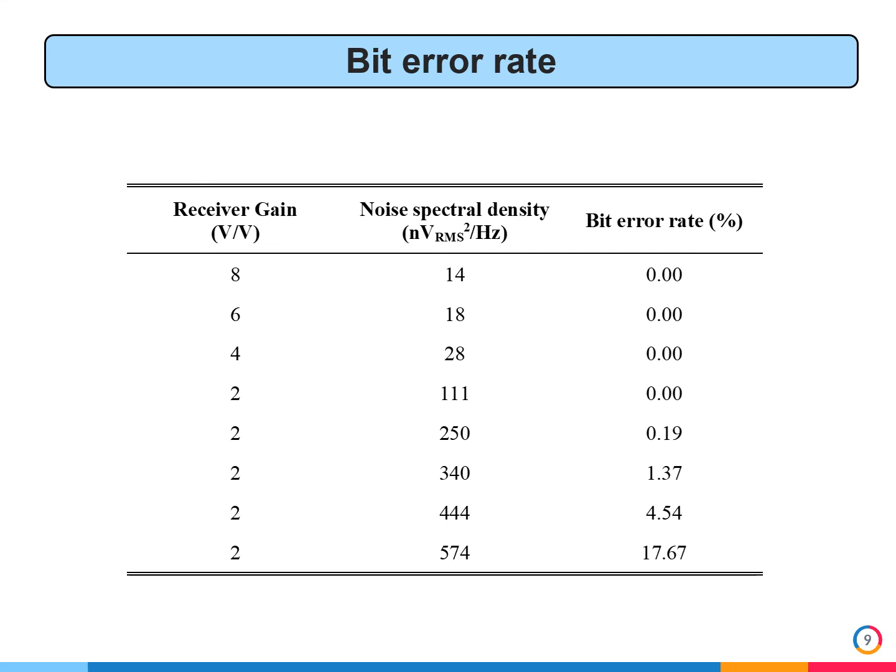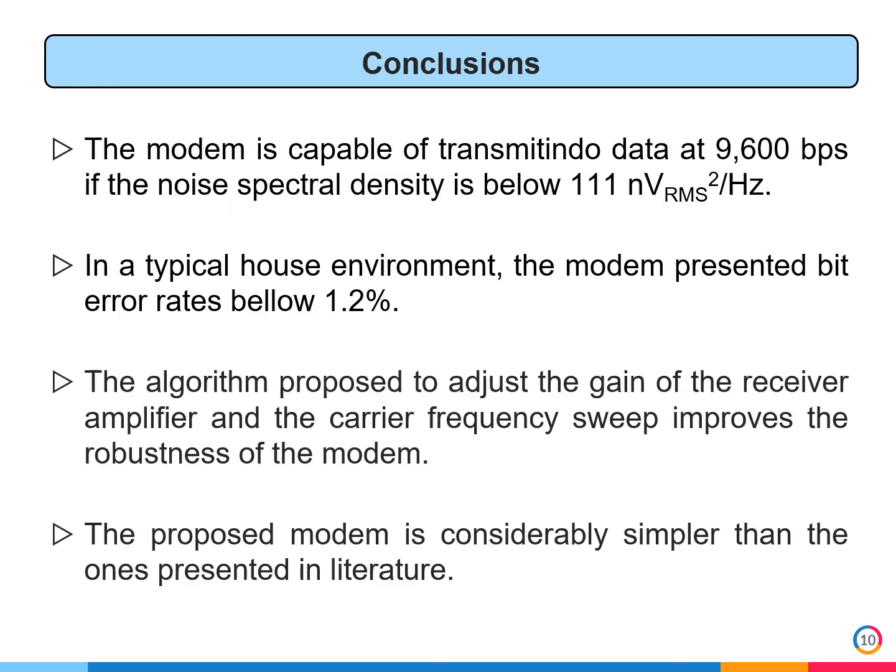The developed modem was also tested in a residential installation with typical appliances connected to the power line, where it showed errors below 1.2% in all situations.